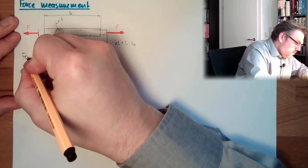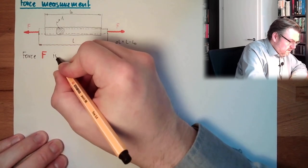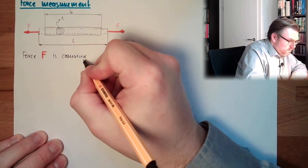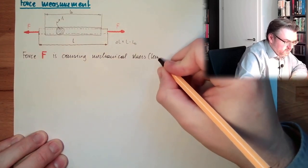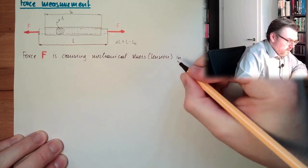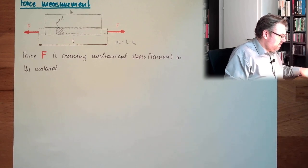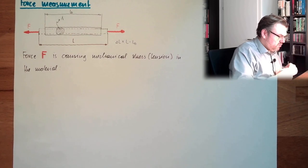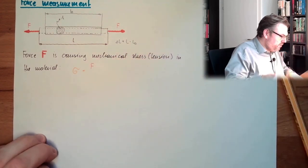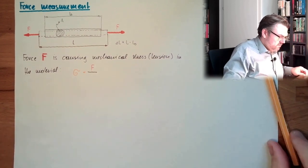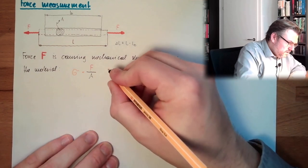So the force F is causing tension, mechanical stress, tension in the material. Usually the stress is called sigma. So we have a certain stress, sigma, and this is nothing more than the force F, the applied force, distributed to the whole area.